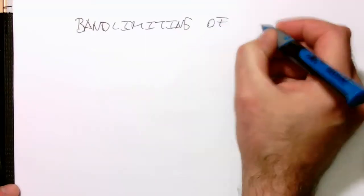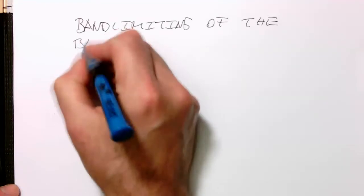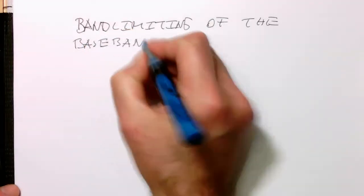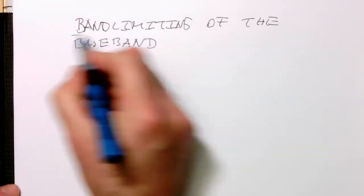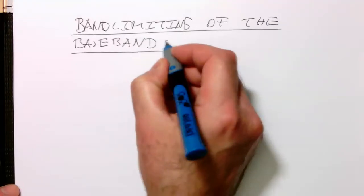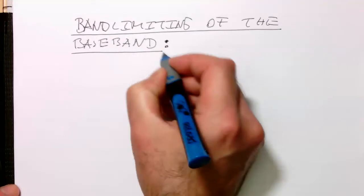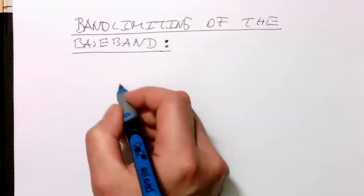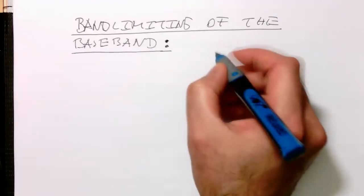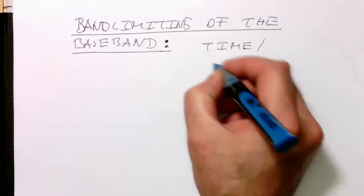Band limiting of the baseband. In the previous clips, we have fixed the amplitude information so that we had a good understanding how to code the signal. But now we need to talk about the time, essentially. So we need to talk about time and bandwidth.